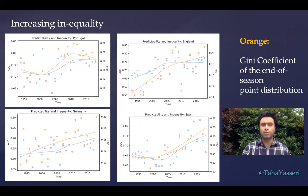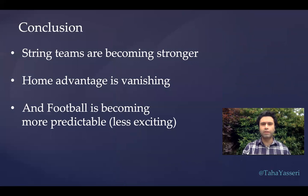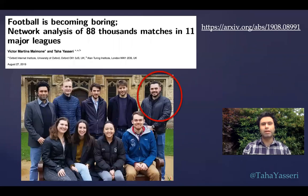Finally, you can look at the inequality of points at the end of the season. Using the Gini coefficient to quantify inequality, you see that inequality follows exactly the predictability we measured over time. In conclusion, stronger teams become stronger, home advantage is vanishing, and altogether football is becoming more predictable and therefore less exciting. Thank you very much for listening and I look forward to talking to you.